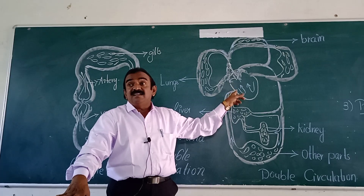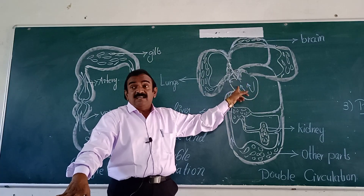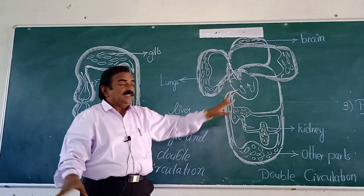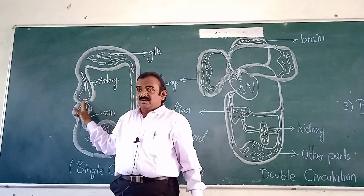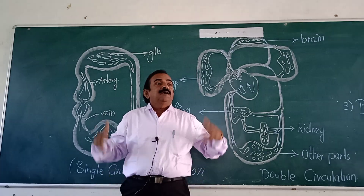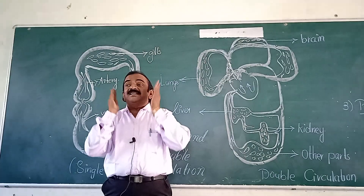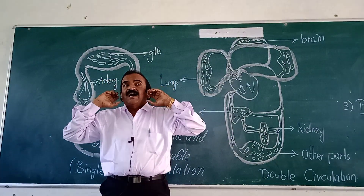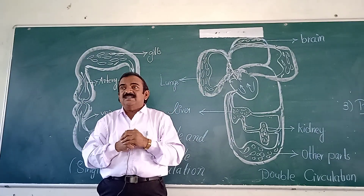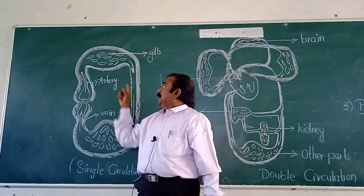In case of fish, the respiratory organs are gills. On either side of the fish head region, you see the gills. Suppose if you open the operculum, beneath the operculum, you see the bright red-coloured gills. And gills are the respiratory organs in case of fish. There are two sets of gills — one on the left, one on the right side of the fish head.